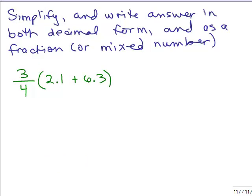We're going to simplify this problem and write the answer in both decimal form and as a fraction or mixed number. There are several ways of doing this problem. I'm going to start off with just doing the order of operation by simplifying inside parentheses and leaving it in terms of decimals for now. So I have 3/4 times, now if I add, remember you have to line up your decimal points, this is going to give you 8.4.